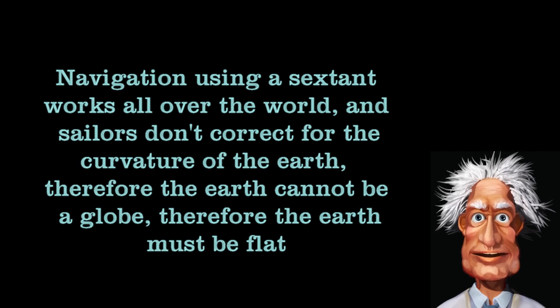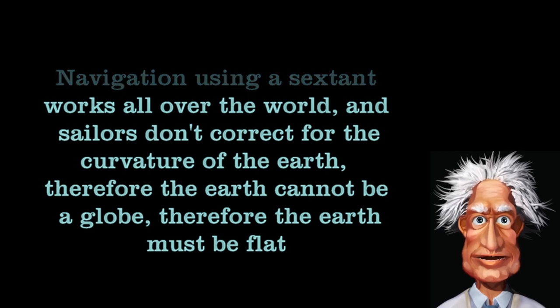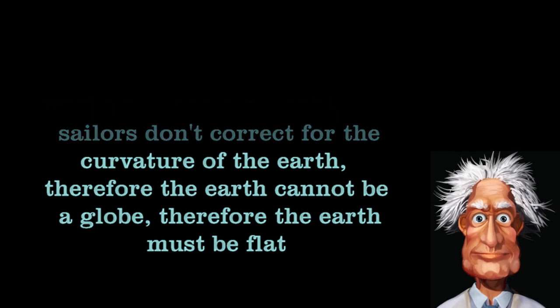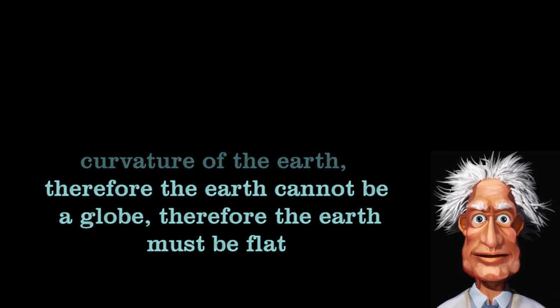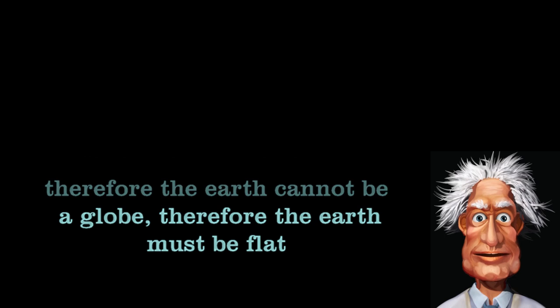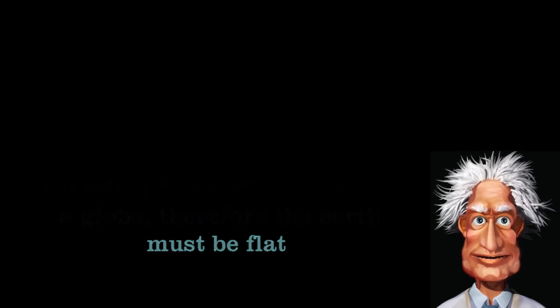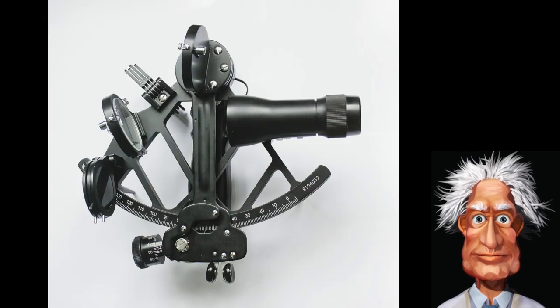Let's analyze this statement. First of all, it is a non-sequitur fallacy. Navigation on a flat earth wouldn't work either without correction because the horizon drops also on a flat earth. And on a flat earth, there wouldn't be a crisp horizon in the first place. So, let's focus on the first part of the statement. How does a sextant work?